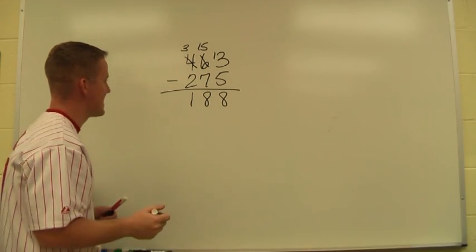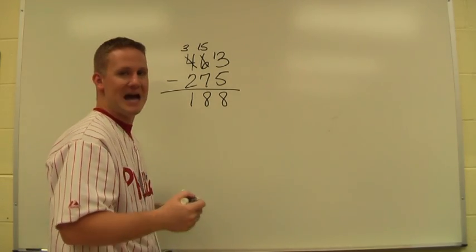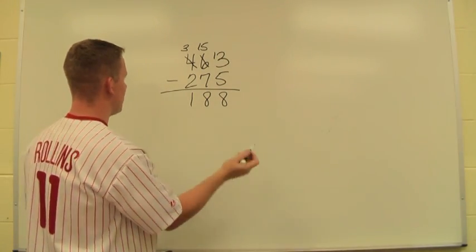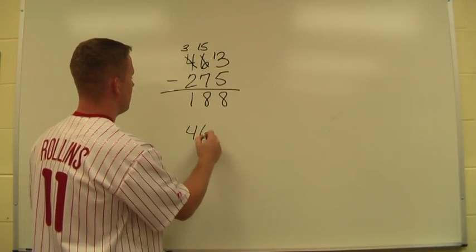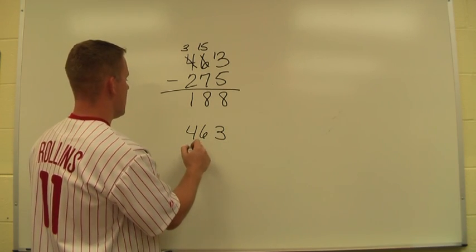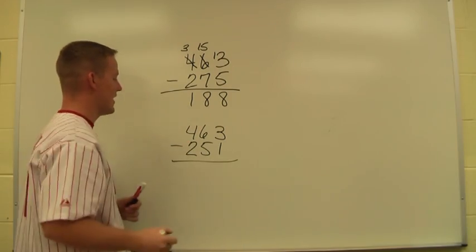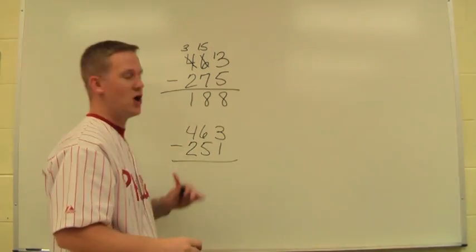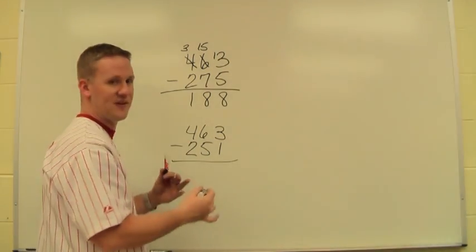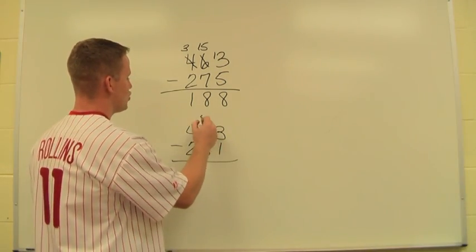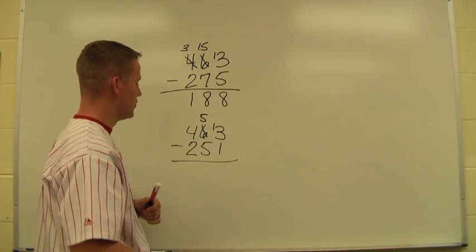Now the great thing about this method is if we happen to trade when we don't need to, it will still come out. So for example, if I change the problem slightly and make it 463 and 251, let's say, I can still do the problem. If I trade wrong, this method will still work because I can fix it at the end. So let's say I didn't think I could do 3 minus 1, and I trade it anyway and made that a 13 minus 1.